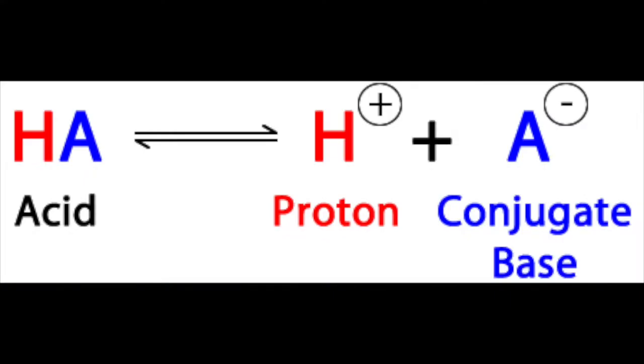This difference in dissociation causes a strong acid at equilibrium to favor products, while a weak acid at equilibrium will favor reactants.